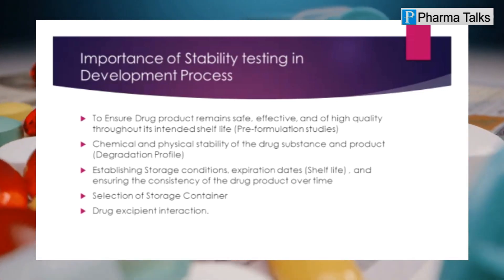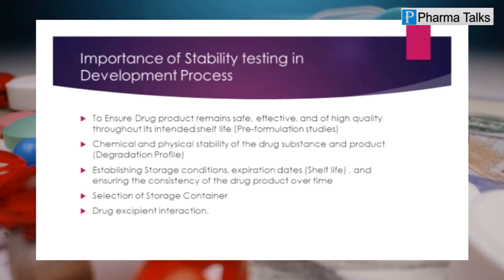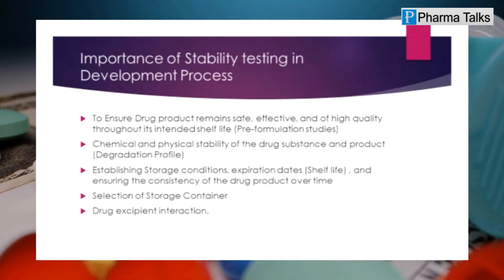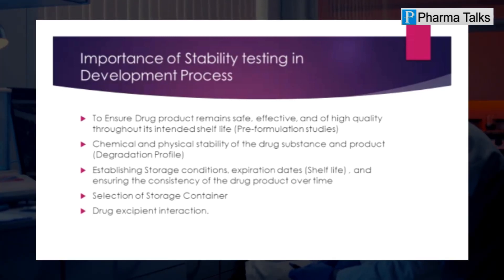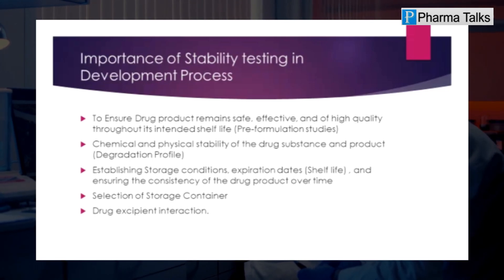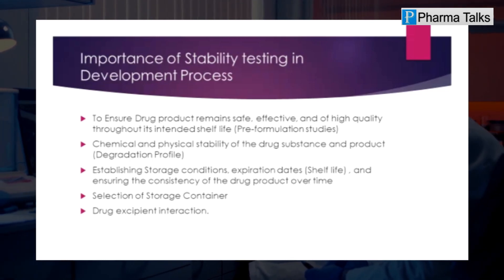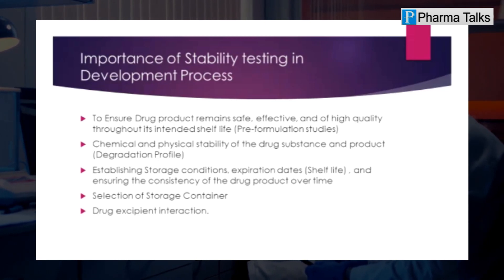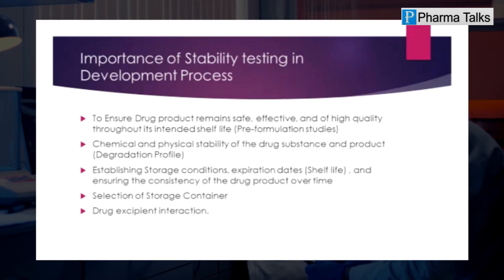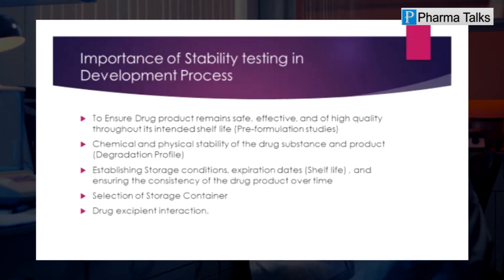The Q1AR2 guideline helps to ensure that stability testing is conducted in a consistent and scientifically valid manner, regardless of the country or region where the testing is conducted. The guideline also provides guidance on the design and conduct of stability studies, including the types of testing that should be conducted, the storage conditions to be used, and the statistical methods for evaluating stability data.